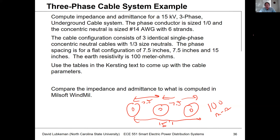We've got ties to ground between the concentric neutral and earth at both ends of the cable. We're going to use some of the tables in Kersting's textbook to come up with the values, and once we have these values we're going to compare them to the values you can compute in the WindMill program.